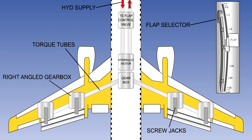The motor drives a transmission system which moves the flaps. In the typical system shown here, the motor drives the gearbox, which rotates torque tubes. They operate right angle gearboxes, which in turn drive screw jacks to move the flaps.